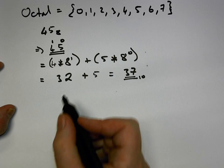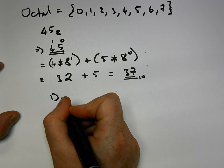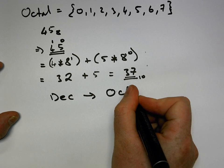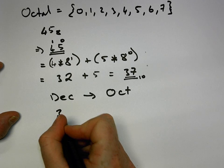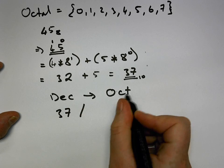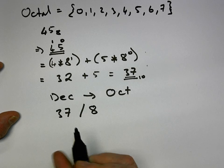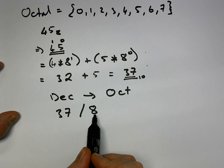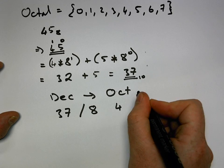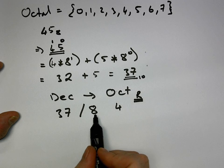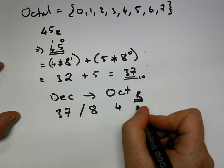So we want to go back the other way. We want to go from our decimal number back into an octal number. We take the decimal number 37, we divide it by the base of the octal, which is 8. So 37 divided by 8 gives us 4, with a remainder of 5 left over.